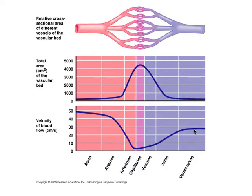At the level of the vena cava, the velocity is 10 to 30 centimeters per second. The cross-sectional area is 8 centimeters squared.